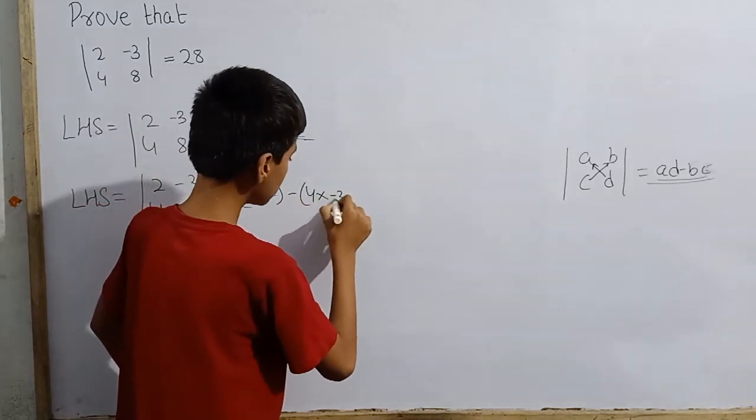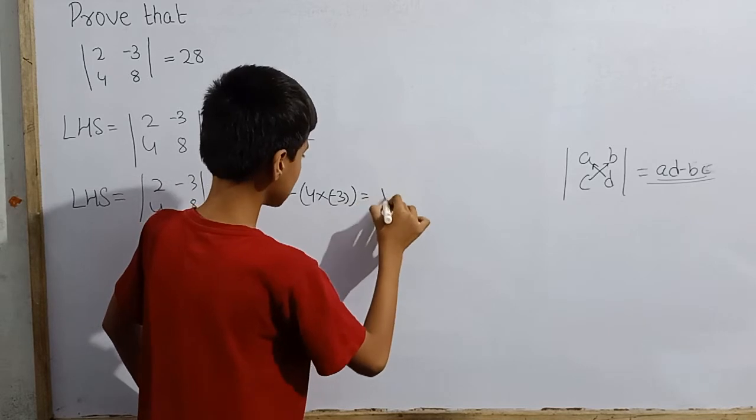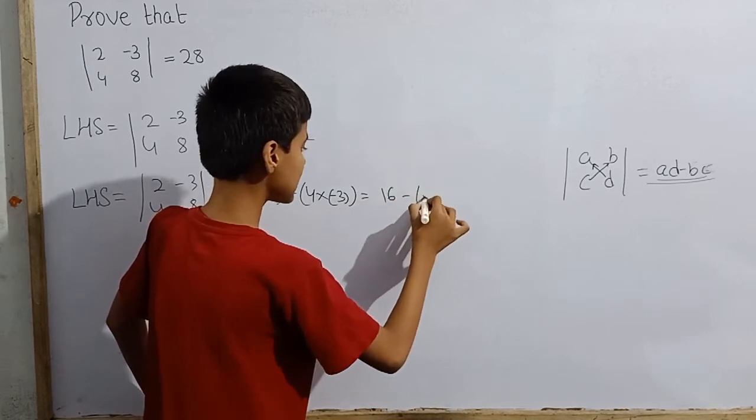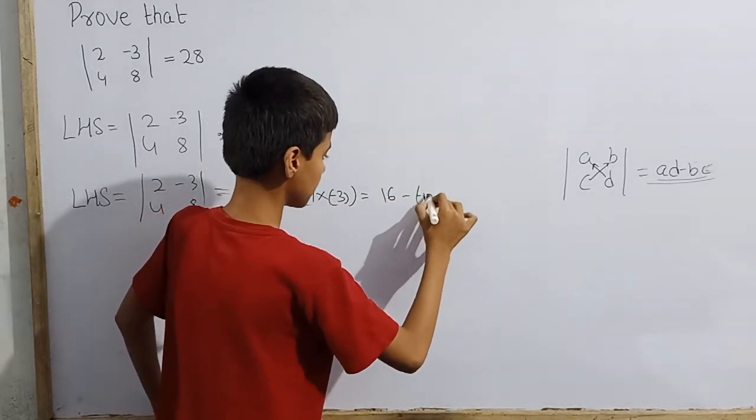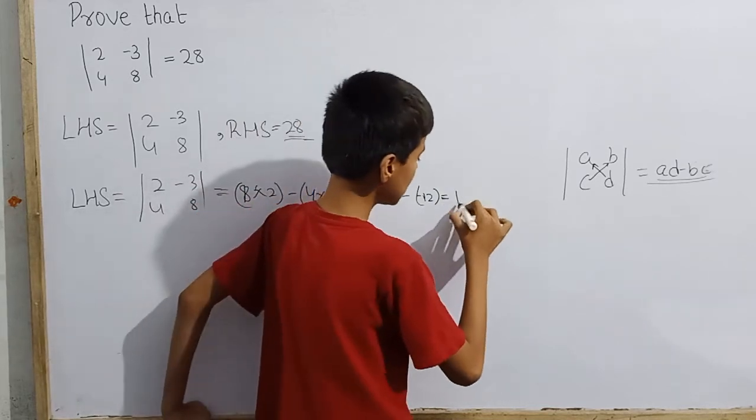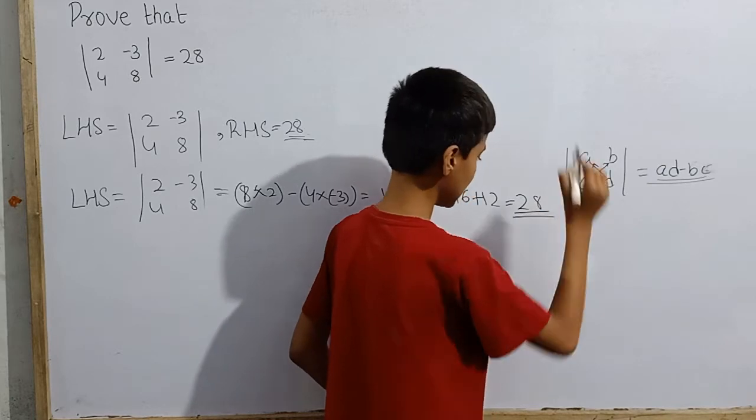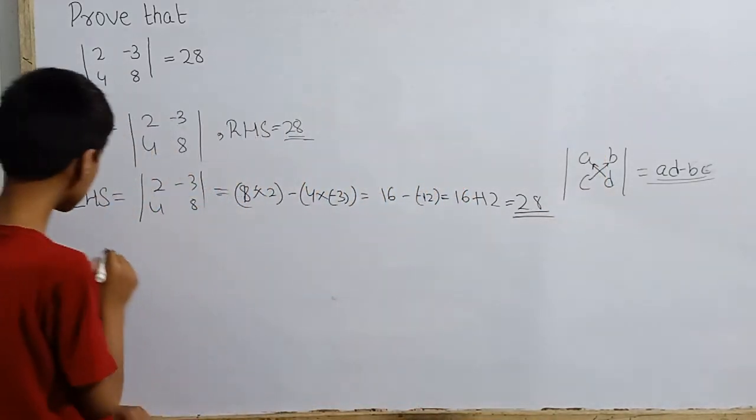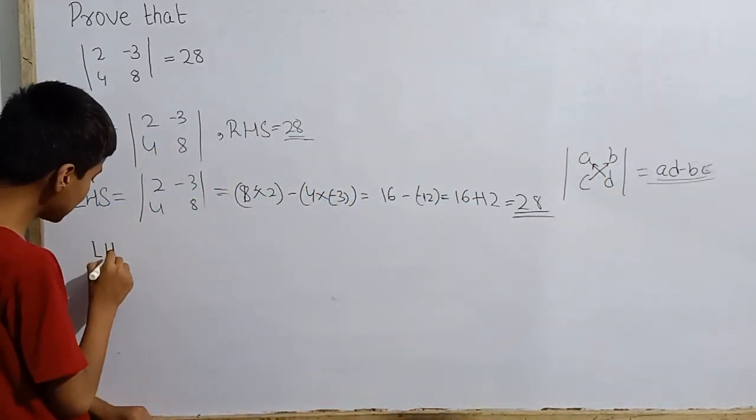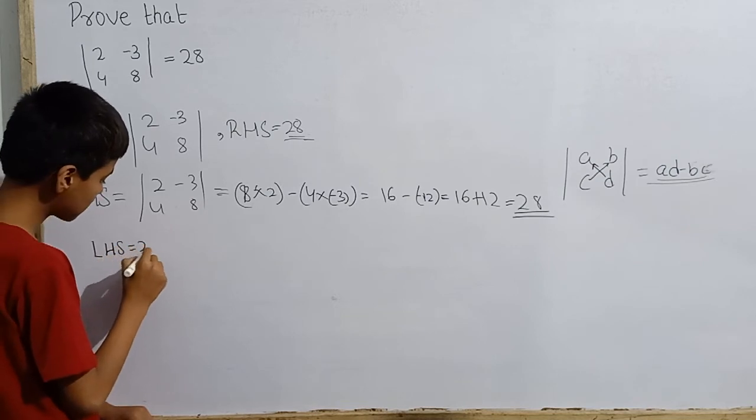So this is 16 minus minus 12. Now this comes out to be 16 plus 12, which is basically 28. So here I have the LHS value again get 28.